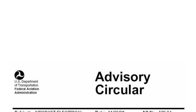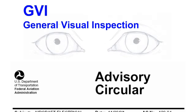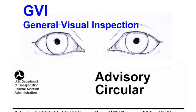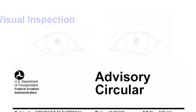AC 120-94 defines different types of inspection, including GVI, which is a general visual inspection and doesn't require touching wire unless access instructions specifically call for it.